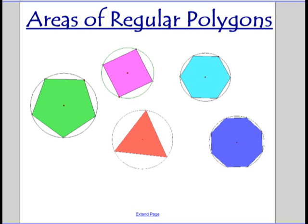What's up? We're going to talk about regular polygons. Regular polygons, of course, are polygons where all the sides and angles are the same.